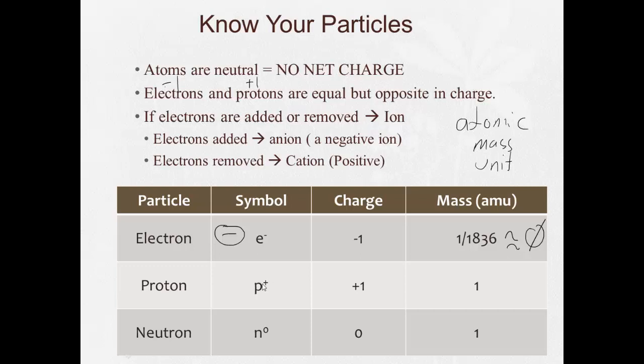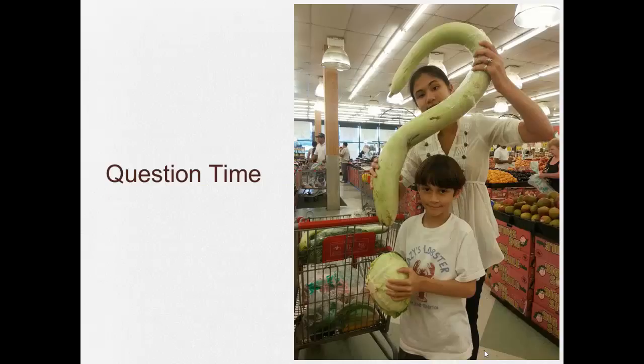Proton. P with a plus, but usually you'll see it drawn like that, a circle with a plus in the middle. Has a charge of plus one, so where the electron was minus one, this is plus one. And it has a mass of one AMU. Neutron, usually just drawn as a circle, but you can see it as N with a zero like this. Has no charge, it's neutral. Same mass as the proton, one AMU.